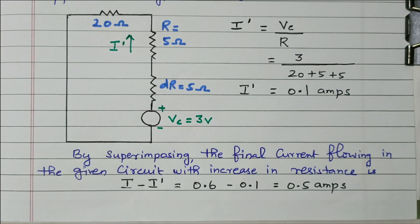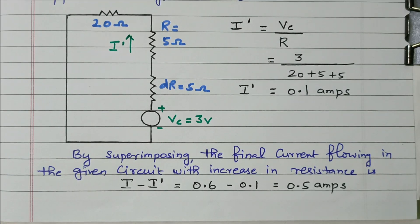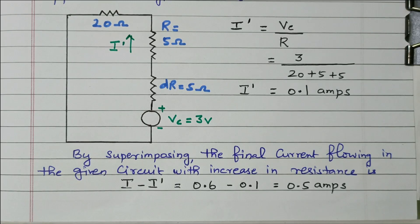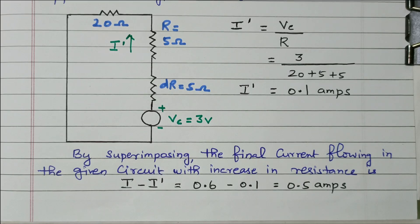In this problem we discussed the compensation theorem in a DC circuit. The resistor value was increased, causing an opposing voltage called the compensation voltage. First the original current was calculated; from that and the change in resistor, the compensated voltage was calculated. From the compensated voltage, the opposing current I' was found. Finally, the resultant current I minus I' was calculated. Subscribe the channel for more videos and notifications. Soft copy of this material is available in the drive — the link is in the description box. Thank you for listening.